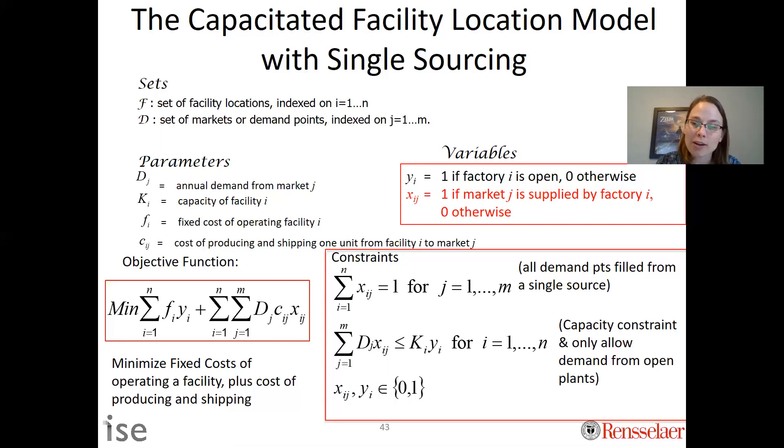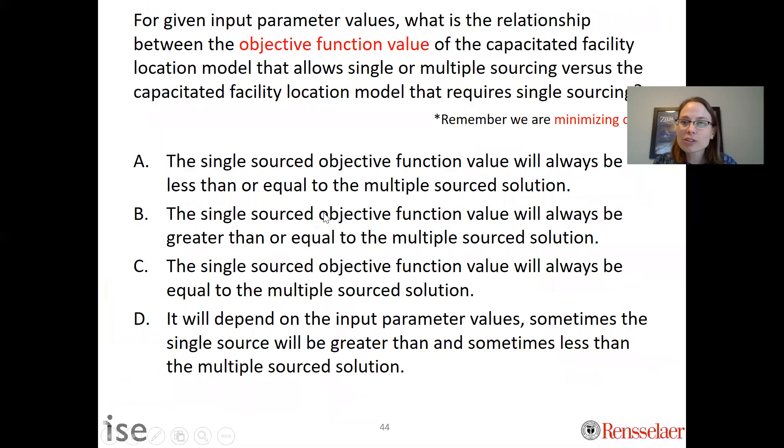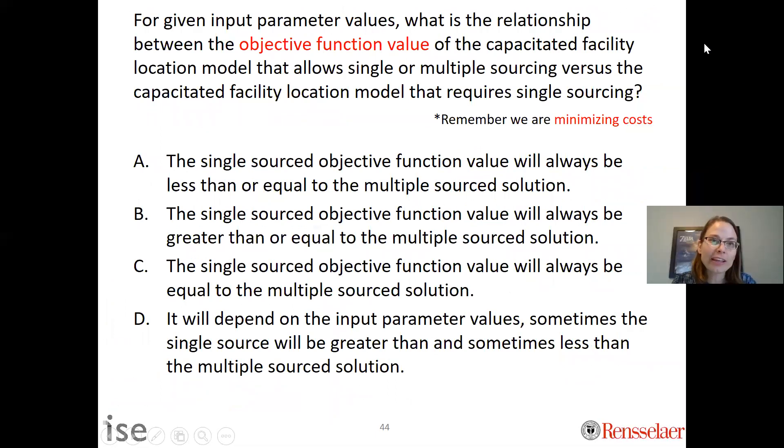My next question for you is: for a given input parameter values, what is the relationship between the objective function value of the capacitated facility location model that allows single or multiple sourcing versus the capacitated facility location that requires only single sourcing? One thing to remember is we are minimizing costs, so an objective function value that's small, that's good. We want small values. I'd encourage you to read through this; I know it's a little wordy. Pause the video and then come back and I'll explain this to you.